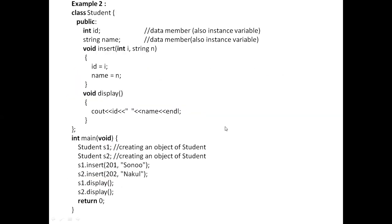Here is another example, somewhat different. I have a class 'student' with public access specifier, int id, and string name. Note: if you don't mention public, by default it will be understood as private. Usually we have all member functions as public, because member functions must be available outside the class. So we define member functions as public. Here it has member functions: insert and display.